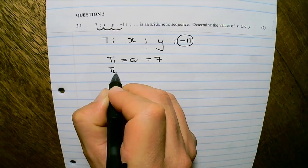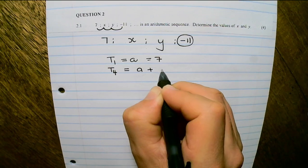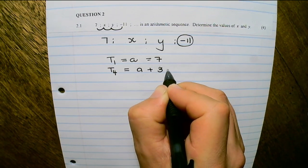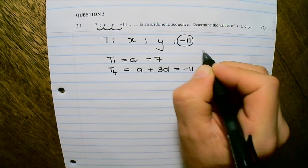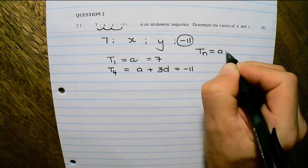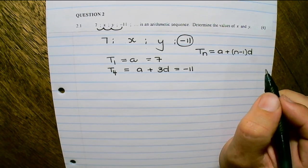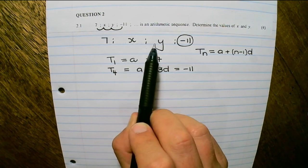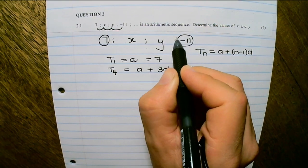So term 4 is equal to a plus (n minus 1)d, which is a plus 3d, equals negative 11. Remember the general term on the formula sheet is a plus (n minus 1)d. You do not need to deal with x and y directly — you just need to use term 1 and term 4.